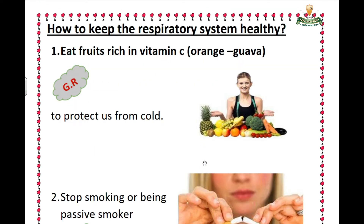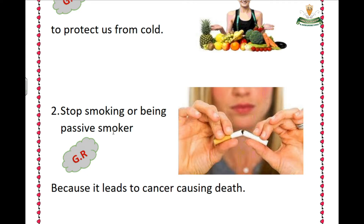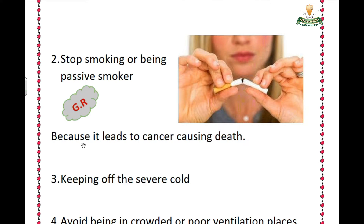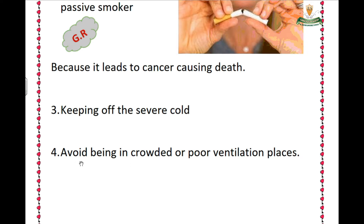How to keep the respiratory system healthy: number one, eat fruits rich in vitamin C, such as oranges, to protect us from colds. Number two, stop or avoid smoking and avoid being a passive smoker, because it leads to cancer. Number three, keep away from severe cold. Number four, avoid being in crowded or poorly ventilated places.